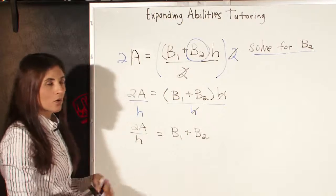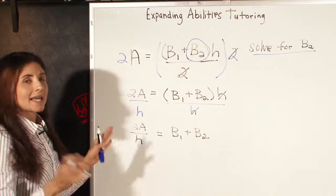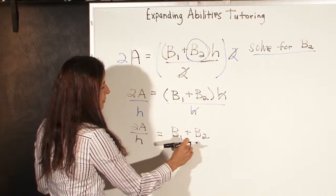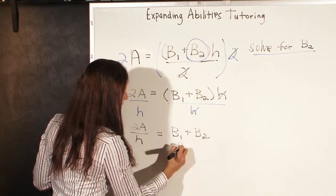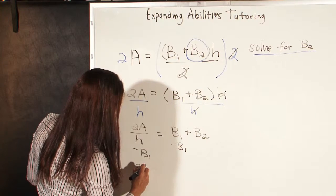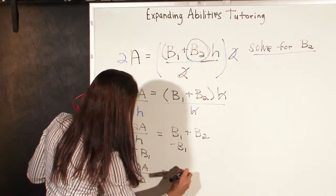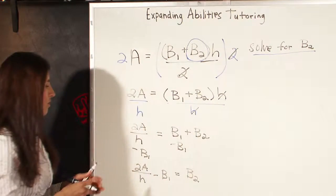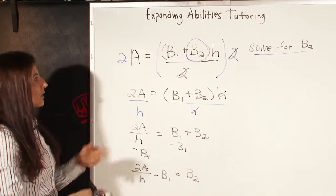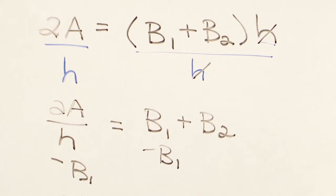The parentheses can go away because we don't need them anymore. And lastly, to get B2 alone, we simply subtract. We have B1 plus B2, so we're going to subtract the B1 from both sides. And we're left with 2A over H minus B1 equals B2. You can reverse the order of that and have B2 equals 2A over H minus B1, and that explains what an equation is in algebra that has variables.